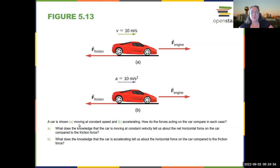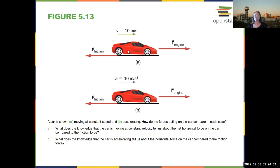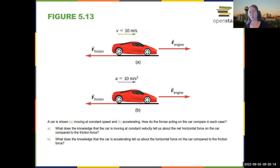Car moving at constant speed versus car accelerating: if you are moving at constant speed, your net force has to be zero. If you are accelerating, your net force has to be positive. So if friction is the same in both cases, the force of the engine has to be larger when accelerating. You can confirm this experimentally — if you want to speed up, you have to put your foot on the gas or pedal harder. Newton's second law quantifies this.